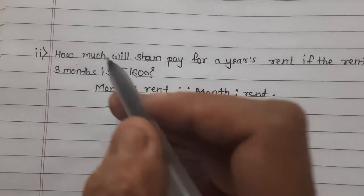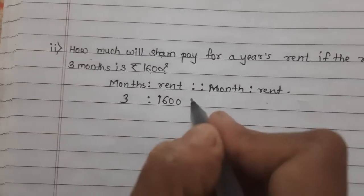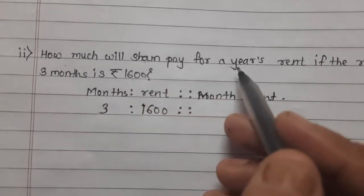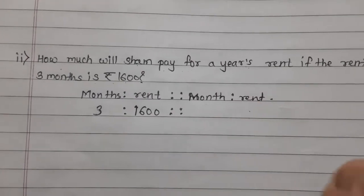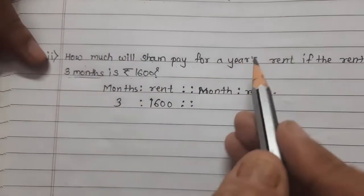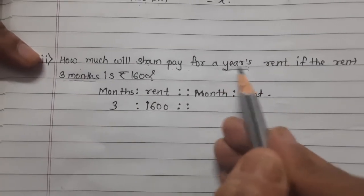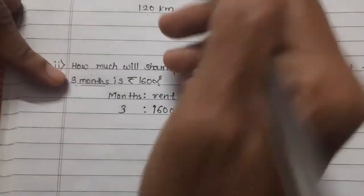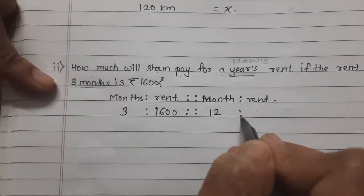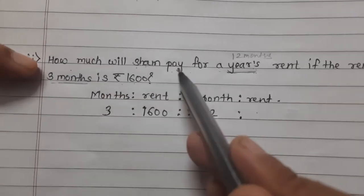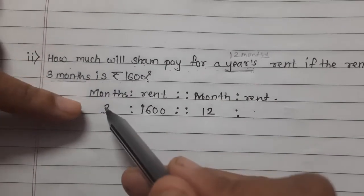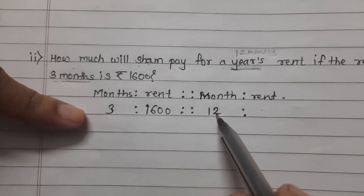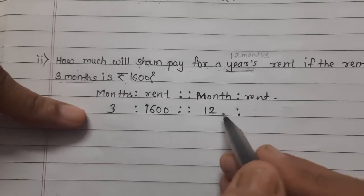How much will Shyam pay for a year's rent? We need to find the rent. Here it is given in months, but it asks for a year. 1 year means 12 months. So for 12 months, let the rent be x. We write 12 months and rent x.